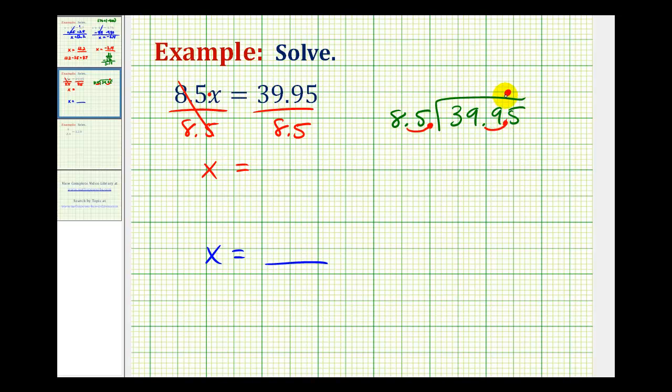Now we'll divide as we normally do. If needed we can add zeros to the right without changing the value of the dividend. The first question is, how many 85s are there in 399? Well, 5 is going to be too large. Let's try 4.